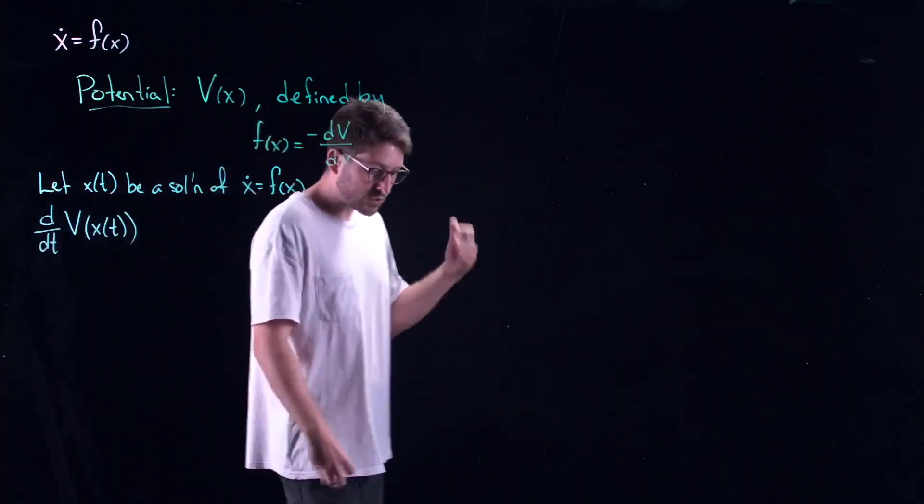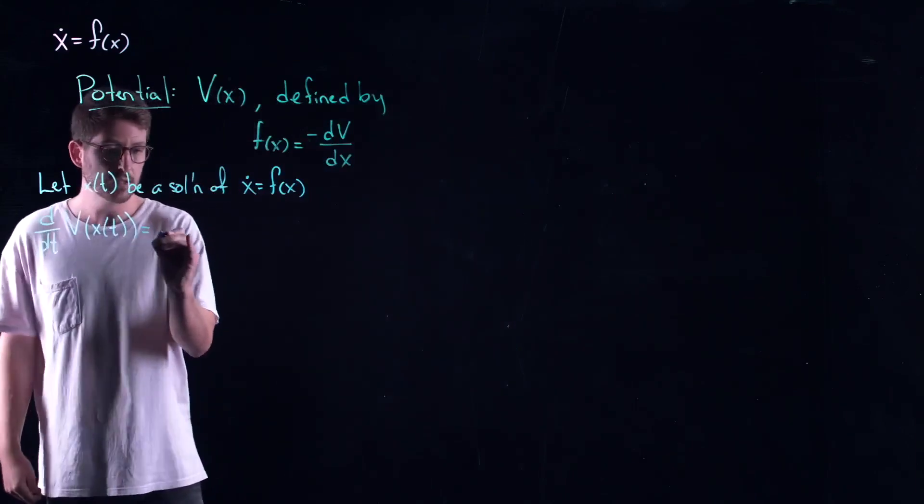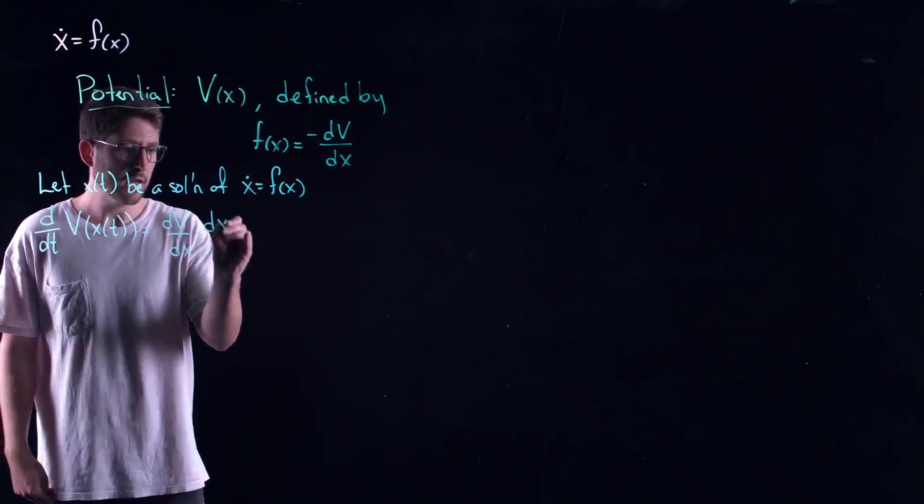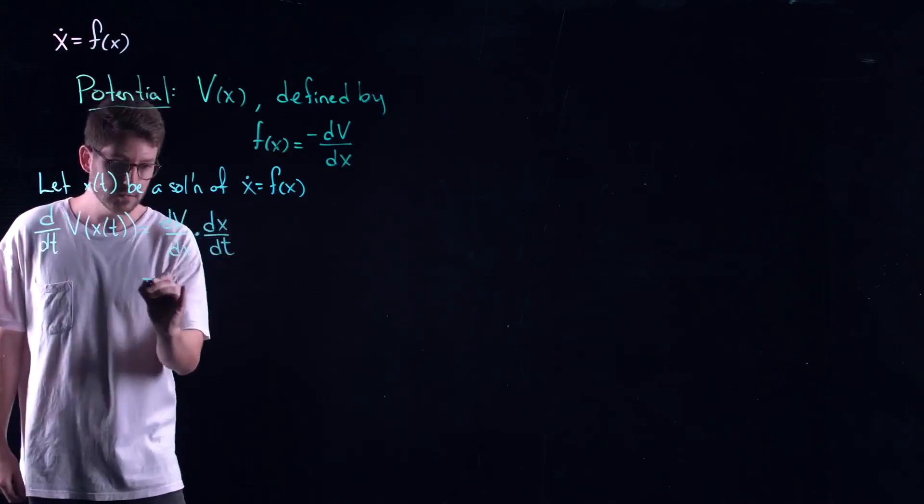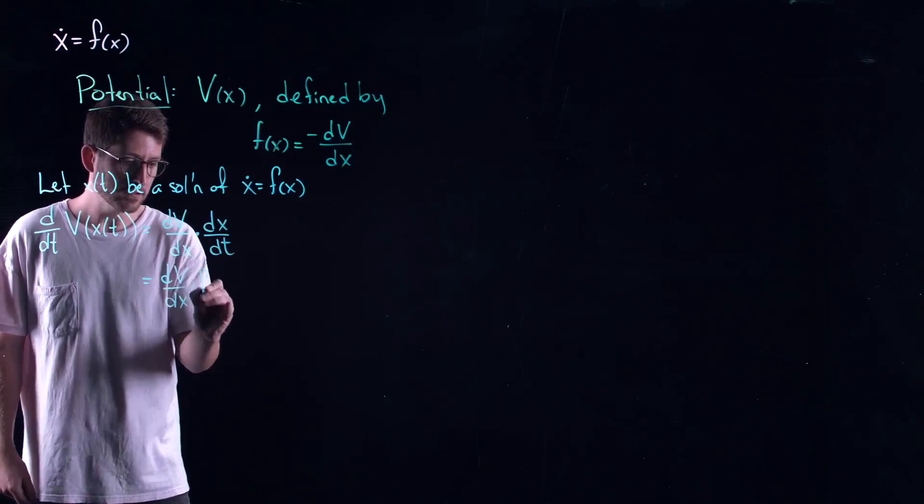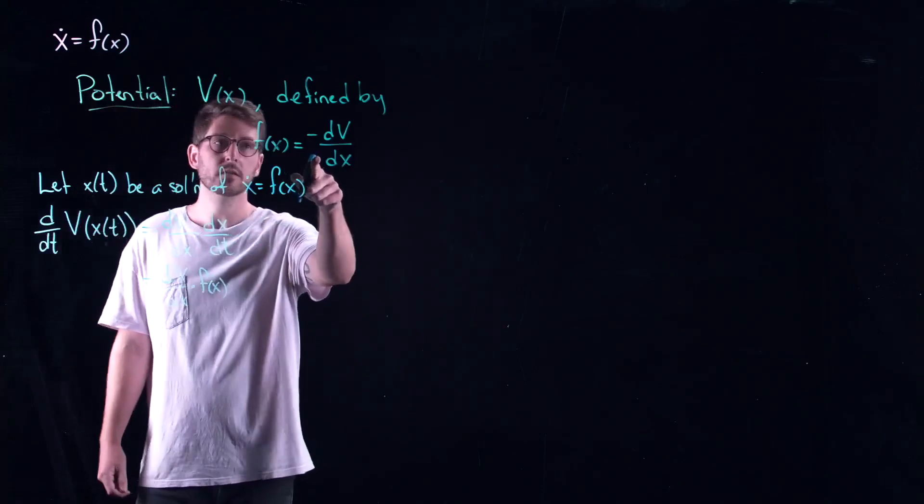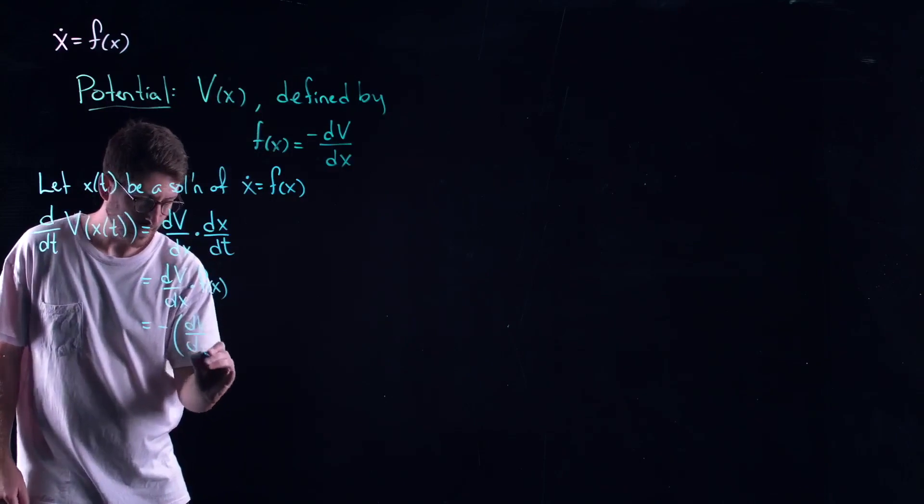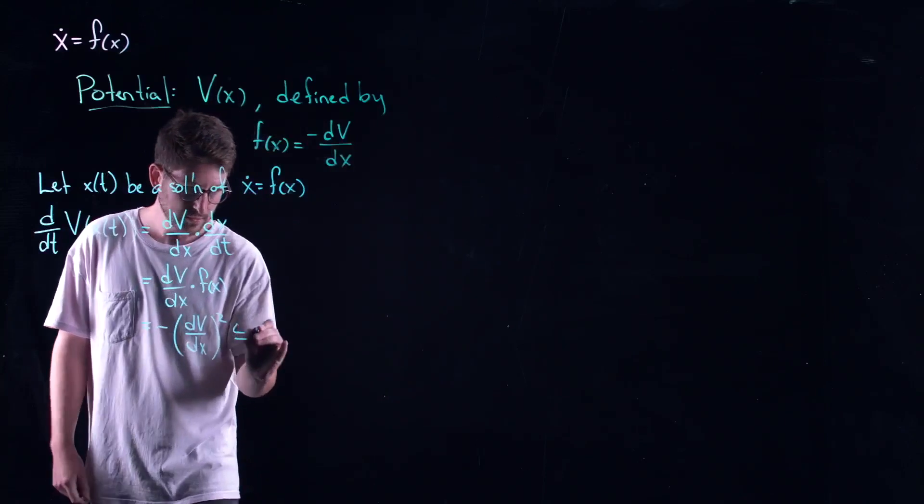So I could take a derivative of this thing. Okay so now I get a function of a function. We've done this before right. This is just the chain rule. So this would give me dv dx times dx dt. dx dt that's x dot. So this is dv dx times f of x. But also f of x is the negative of dv dx. So this becomes negative dv dx squared. Which is less than or equal to zero.